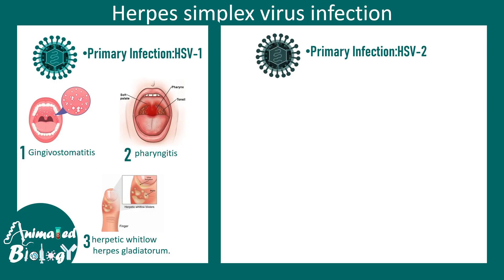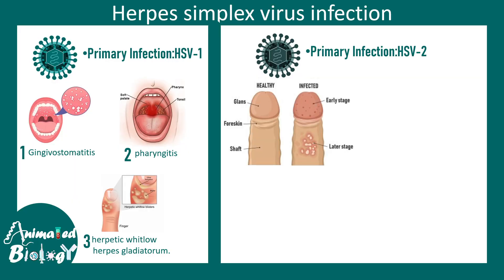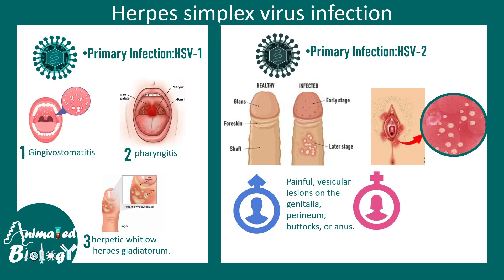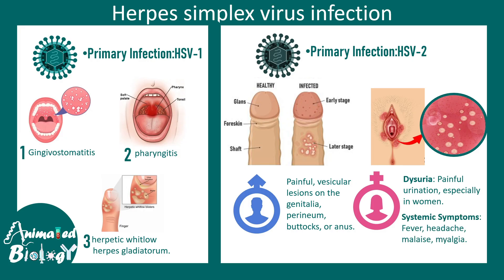Primary infections caused by HSV-2 generally affect the genitalia. There are rash-like blisters that are fluid-filled, quite itchy and painful. They can be found in the genitals, buttocks, and anus, and similarly around the vaginal and anal region in females. In females, dysuria — that is, painful urination — is pretty common. Sometimes there is systemic involvement including fever, headache, and myalgia.